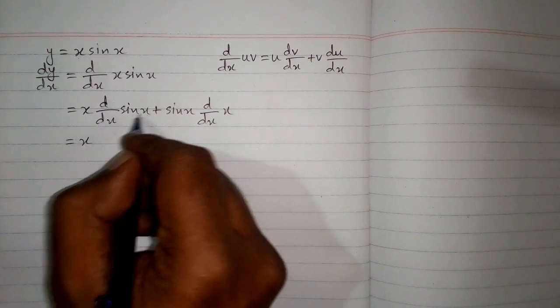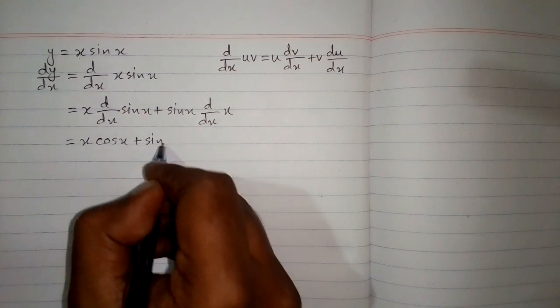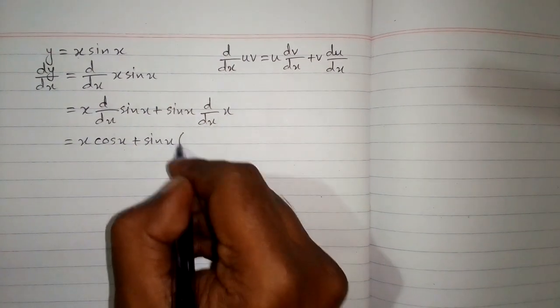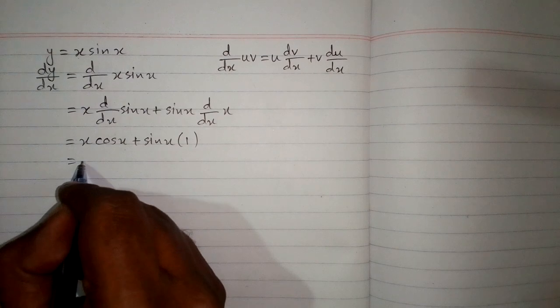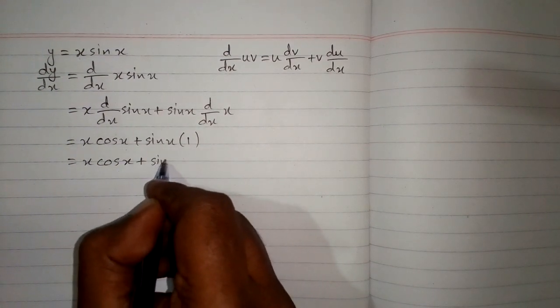Now the derivative of sin x is cos x and the derivative of x is 1. So the answer is x times cos x plus sin x.